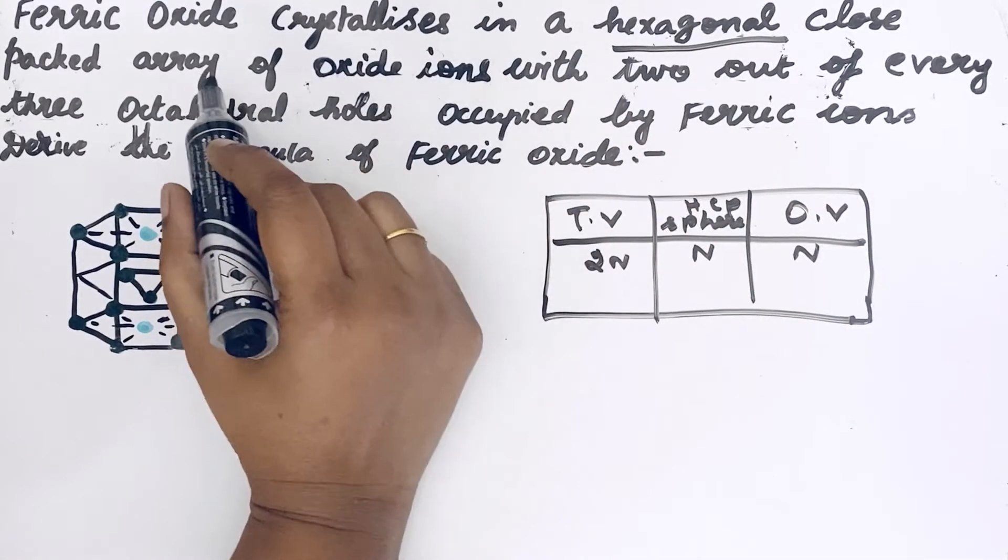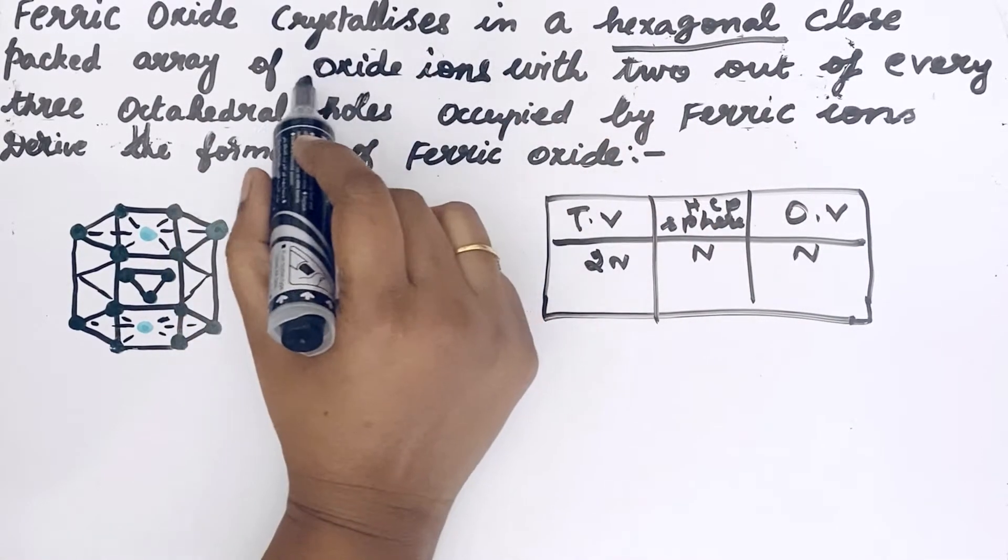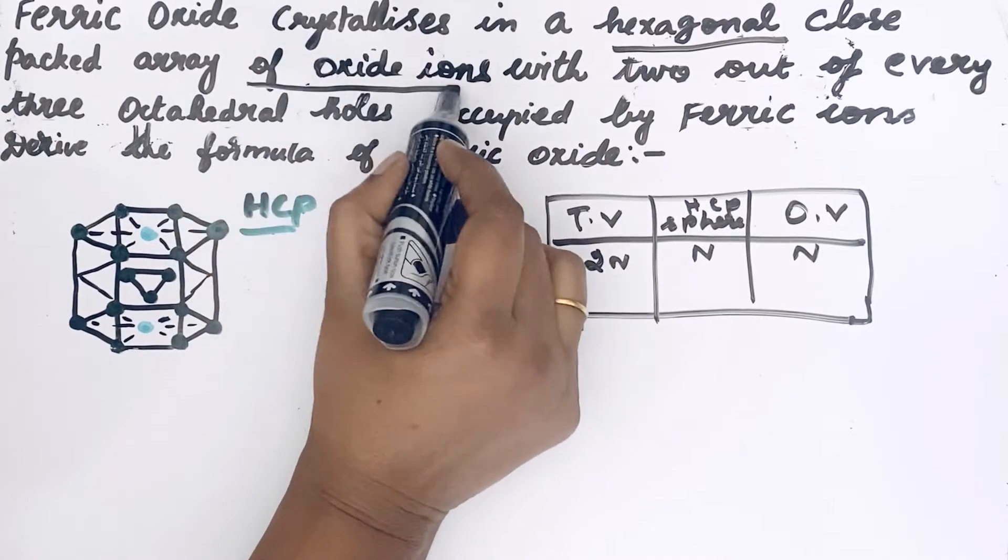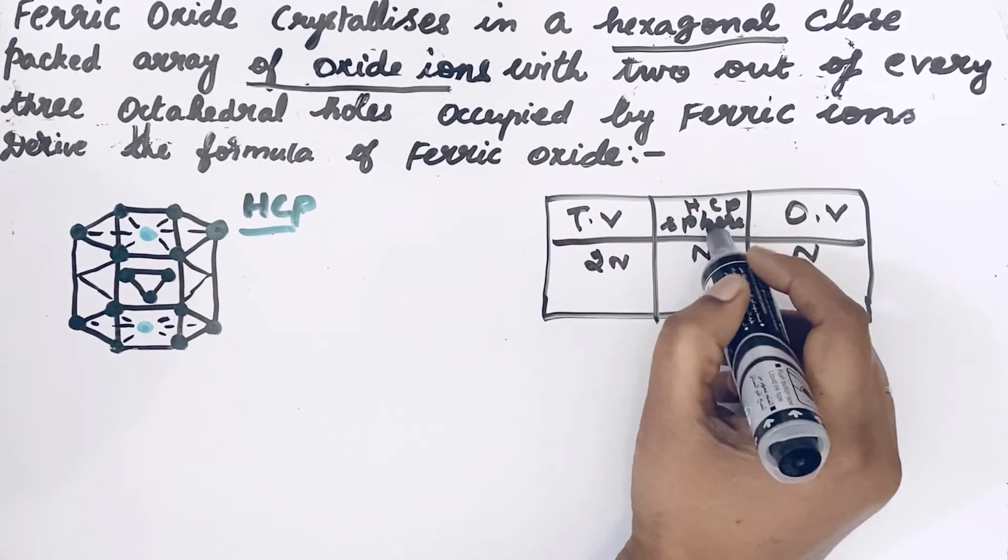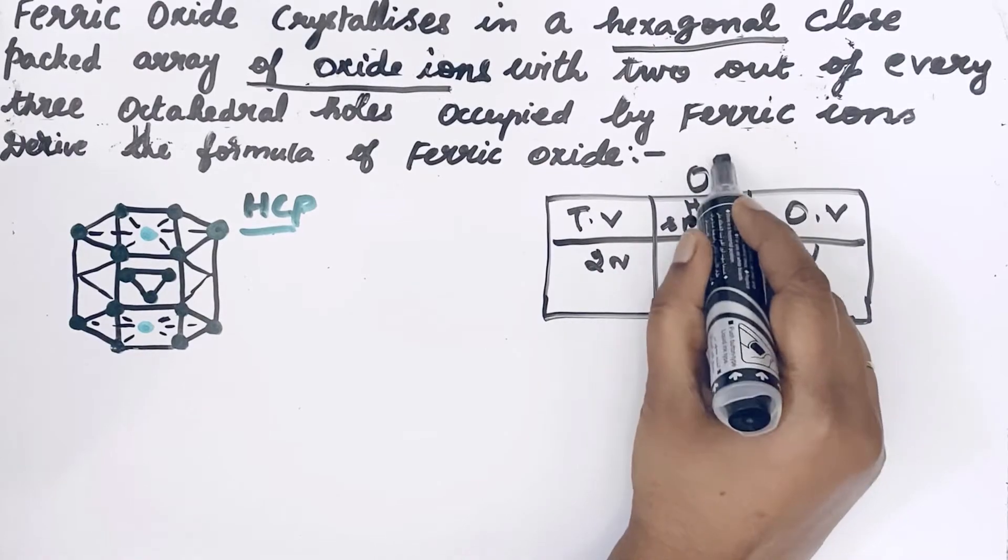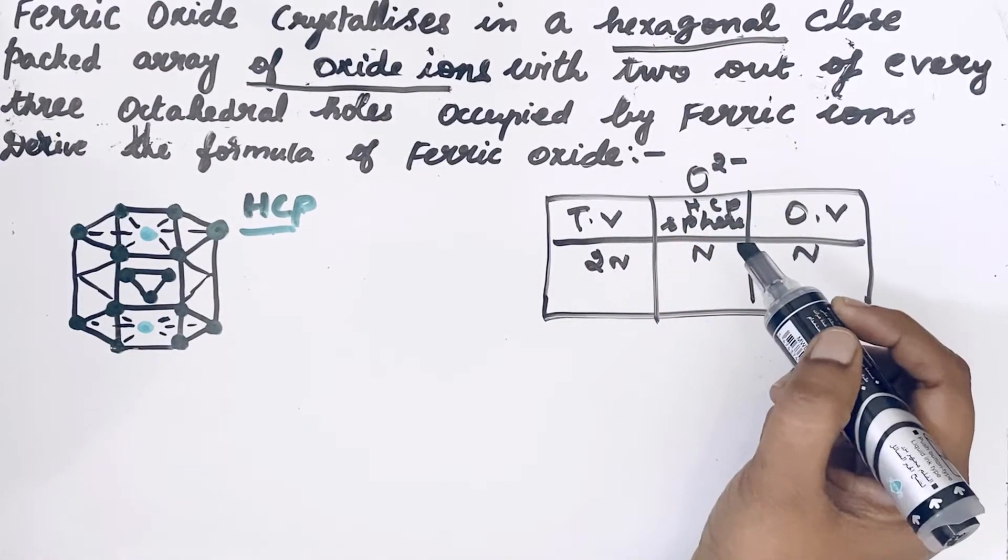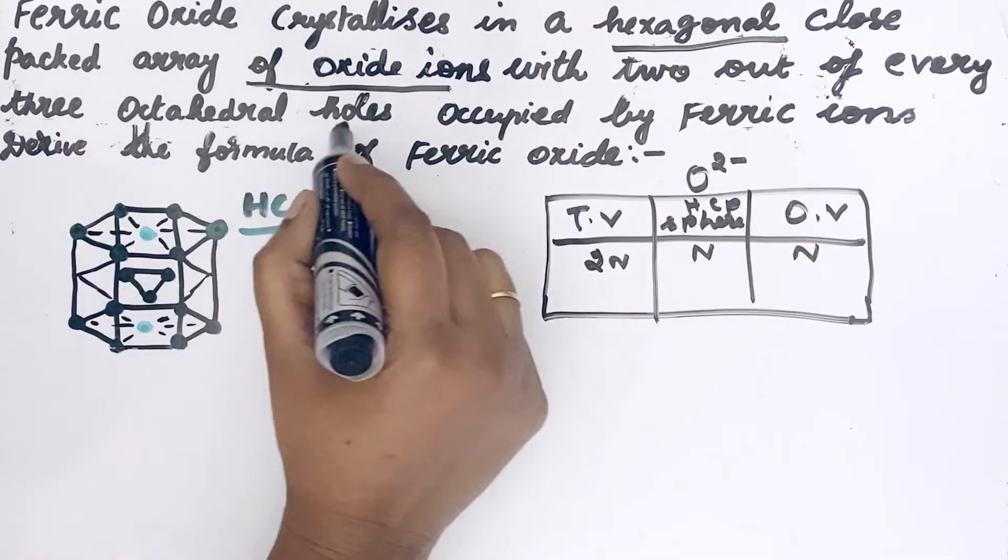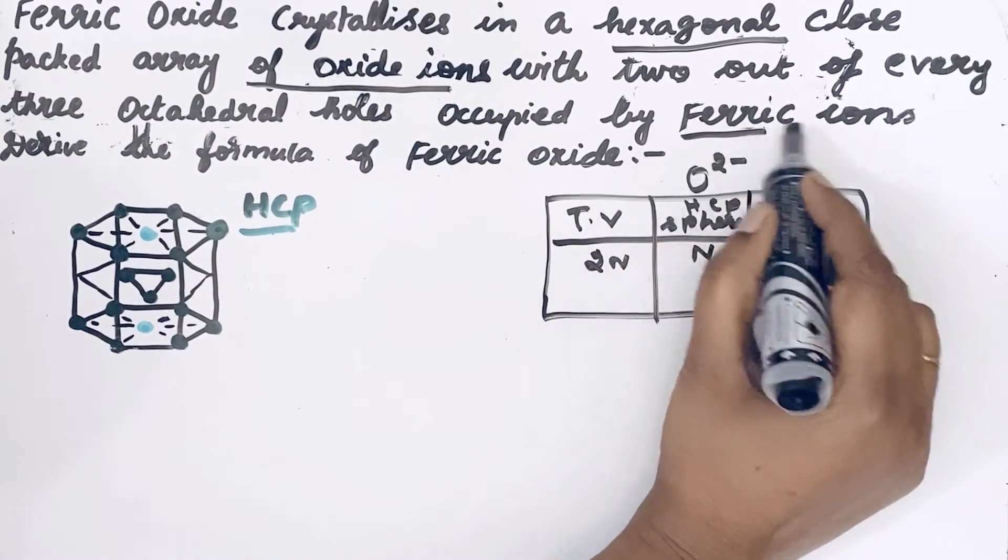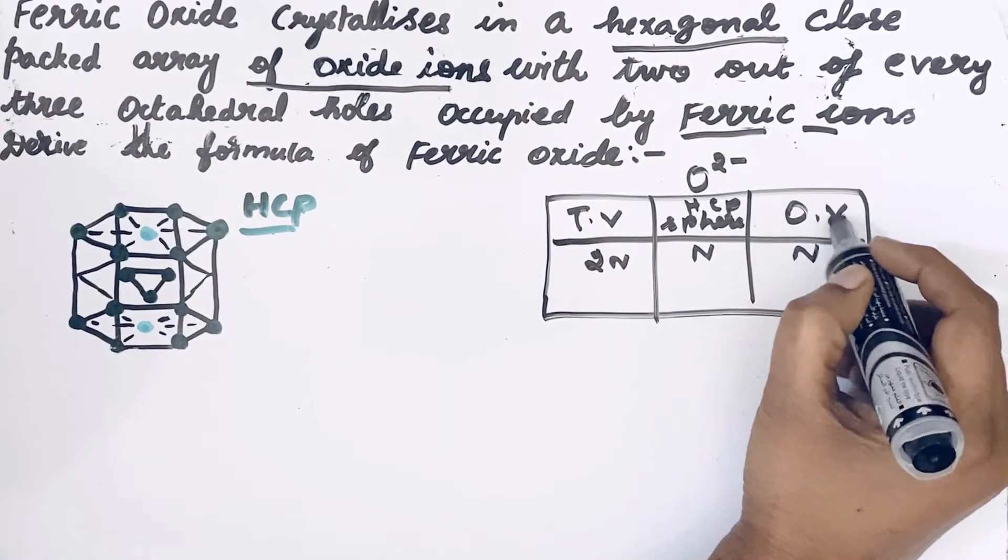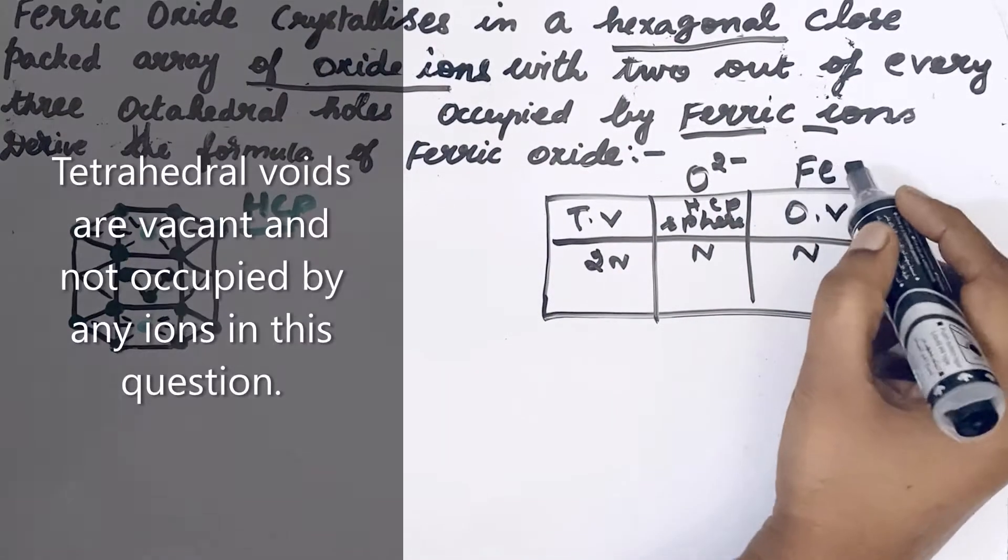See the question. HCP is the array of oxide ions, so HCP sphere is oxide ions, O²⁻ ions. Two out of every three octahedral holes occupied by ferric ions, so octahedral void is occupied by ferric ions.